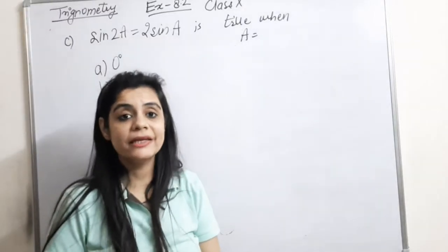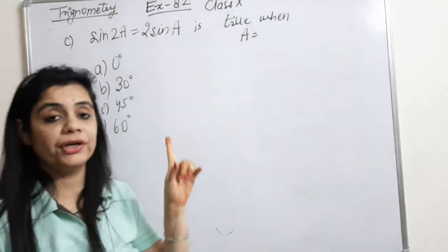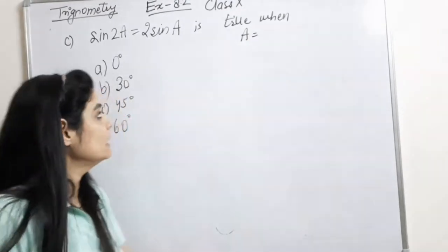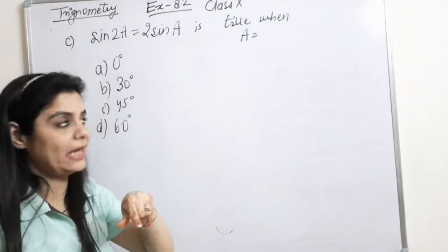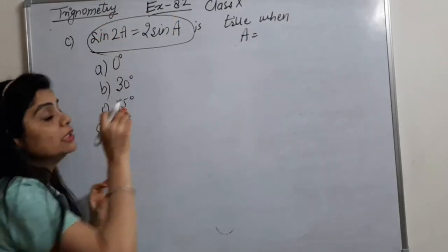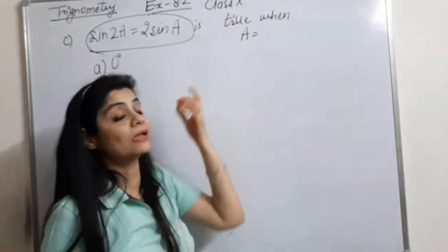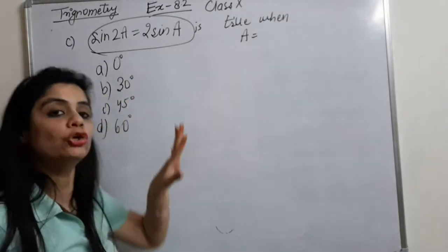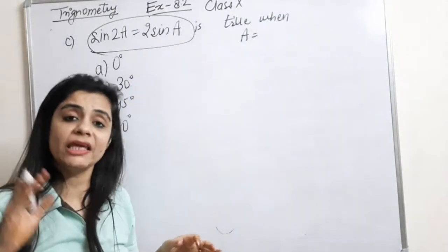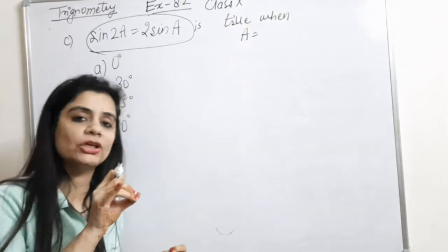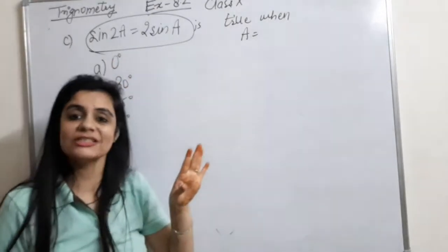My next part is very very important — this one also comes in exams many times. sin 2A equals 2 sin A is true. When is this condition true? What value of A makes this true? That is, when will LHS and RHS be equal? What should we put in place of A so that LHS and RHS become equal?